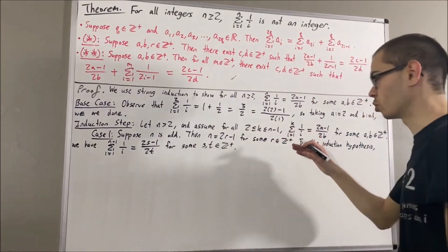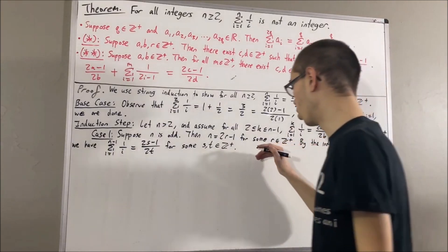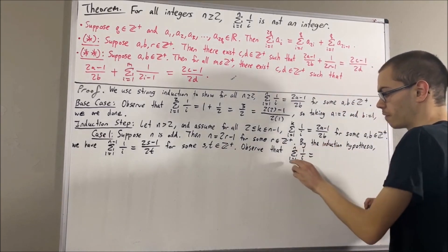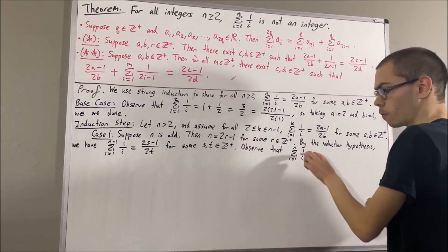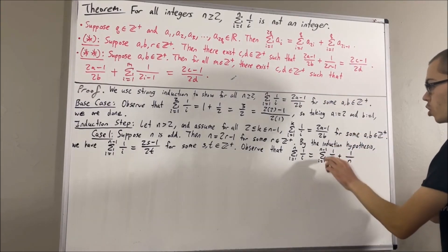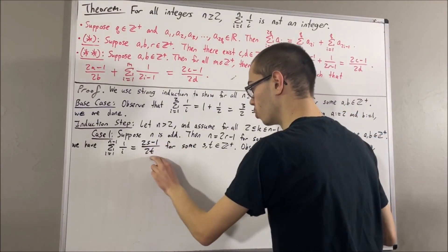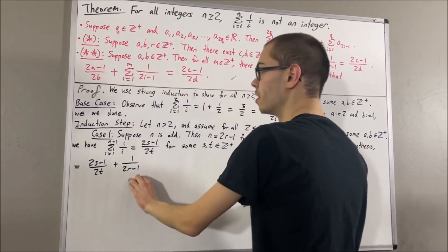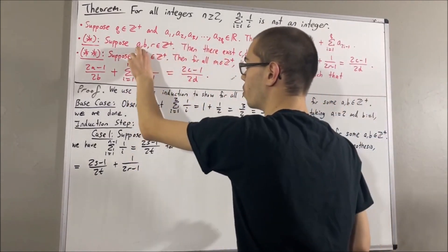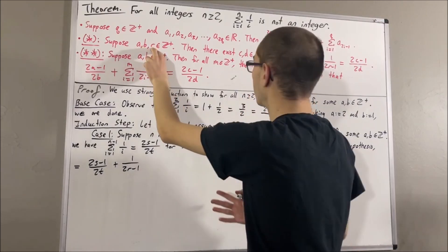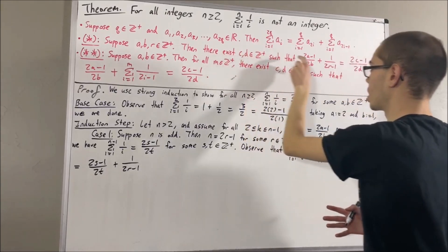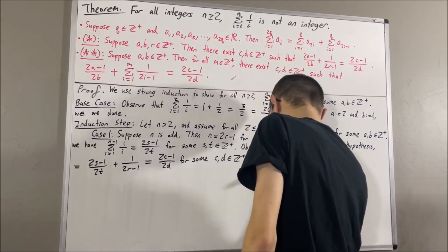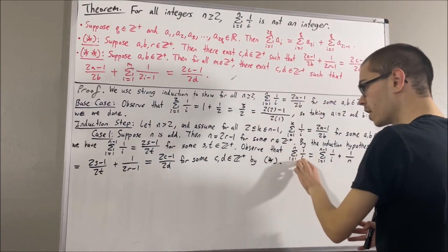Applying the induction hypothesis to n−1, we have that the sum from i equals 1 to n−1 of 1/i has the form (2s − 1)/2^t for some positive integers s and t. We pull away the nth term from the sum, giving the sum from i equals 1 to n−1 of 1/i plus 1/n. That sum equals (2s − 1)/2^t, and n equals 2r − 1. By ★, replacing a with s, b with t, r with r, there exist positive integers c and d such that (2s − 1)/2^t + 1/(2r − 1) equals (2c − 1)/2^d. So the sum from i equals 1 to n of 1/i has this form. This completes the odd case.